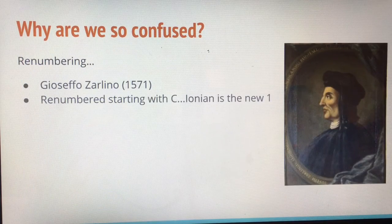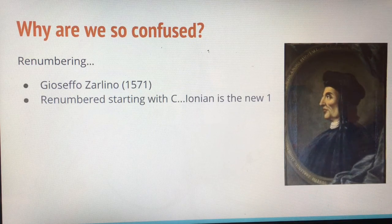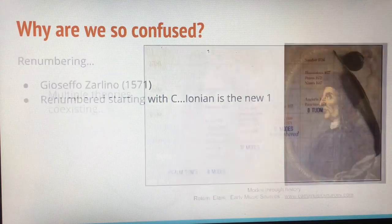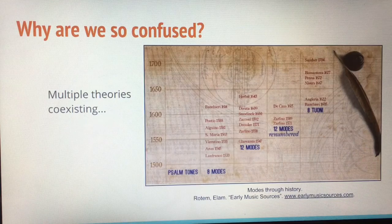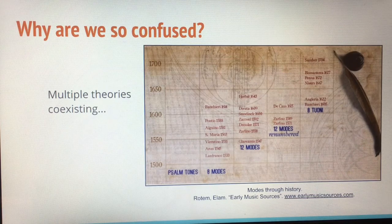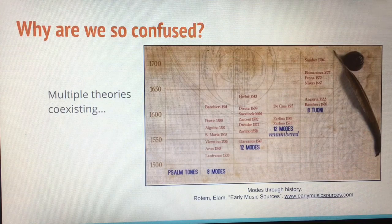The confusion continues in the 1500s when Gioseffo Zarlino decided to renumber the modes. He renumbered them starting with the finalis on C, so now the Ionian was the new first mode. Not everyone took to his new ideas, and therefore multiple theories were coexisting. In this graphic, you can see that from the time when there were 8 modes, to having 12 modes by Glareanus, to 12 modes renumbered by Zarlino, and other ideas after that, some of the mode ideas overlapped with different theorists and philosophers sharing ideas at the same time.